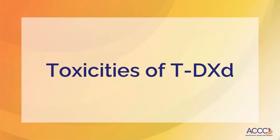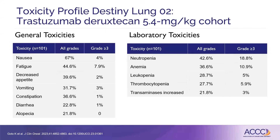Let's first talk about the toxicities of trastuzumab-deruxtecan, or TDXD. This is the only drug that actually has an FDA approval in non-small cell lung cancer right now, and this is based on the DESTINY LUNG-02 trial. It's approved at 5.4 milligrams per kilogram.